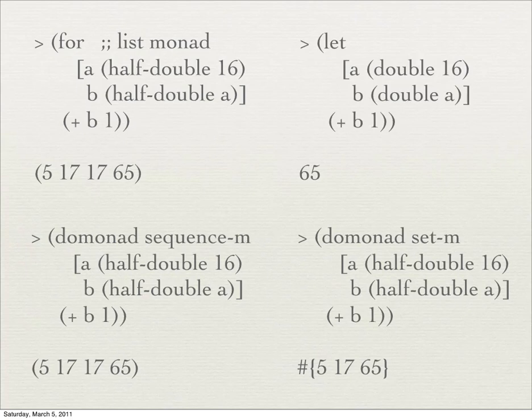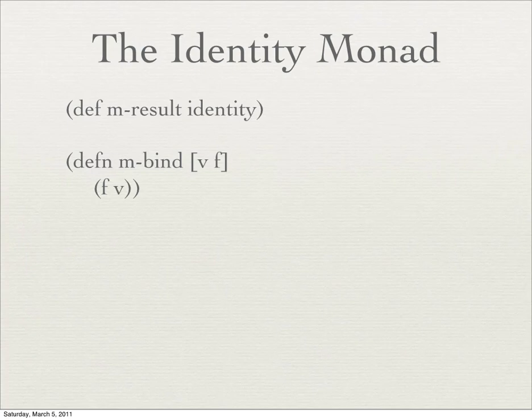That structure, if you're a Clojure programmer, should look a little familiar — it's the same syntactic structure as a 'let' block. Let assigns some value to A and some value to B, then evaluates the expression with those values set, and in that case you get 65. It's the same syntactic structure, and so a little light should be going on saying maybe there's something monadic about that. And there is — it's called the identity monad. The identity monad is basically useless except from a theoretical perspective. Mresult takes a value and does nothing to it, just returns that value. And mbind takes a value and a function, and just calls the function with that value.